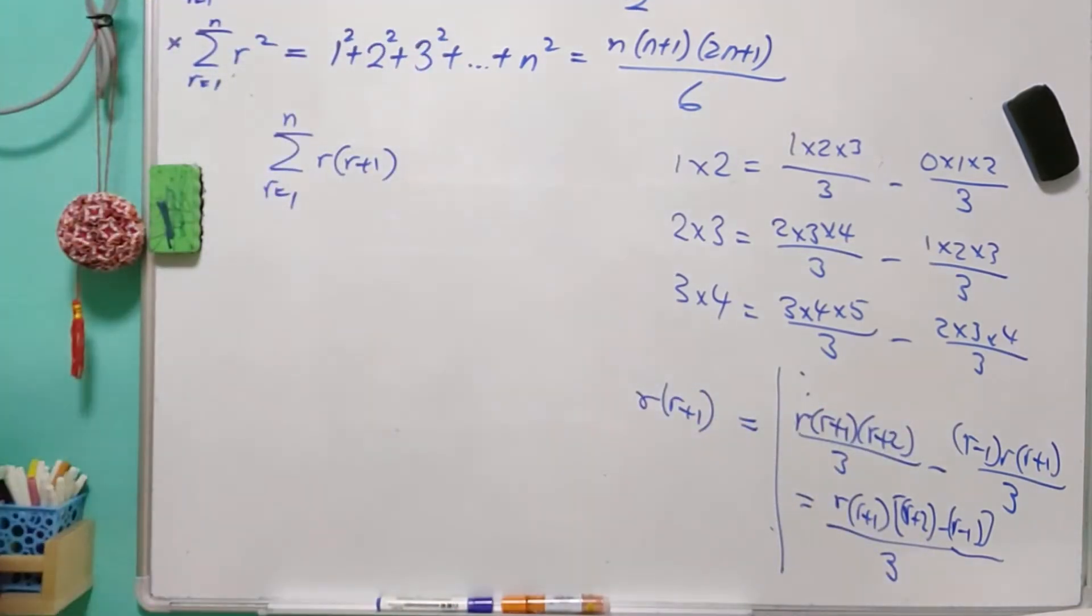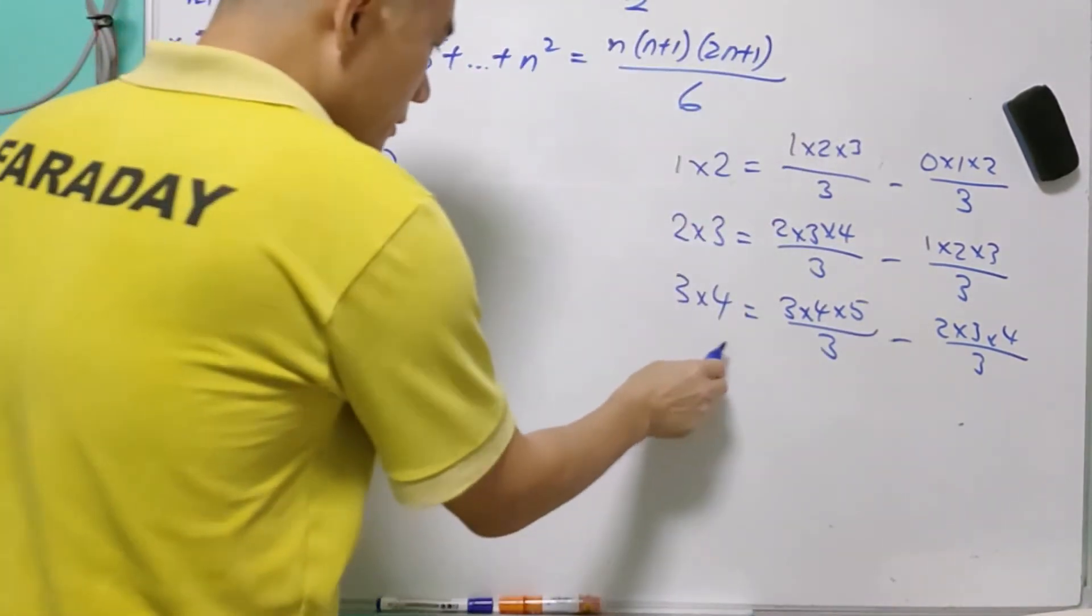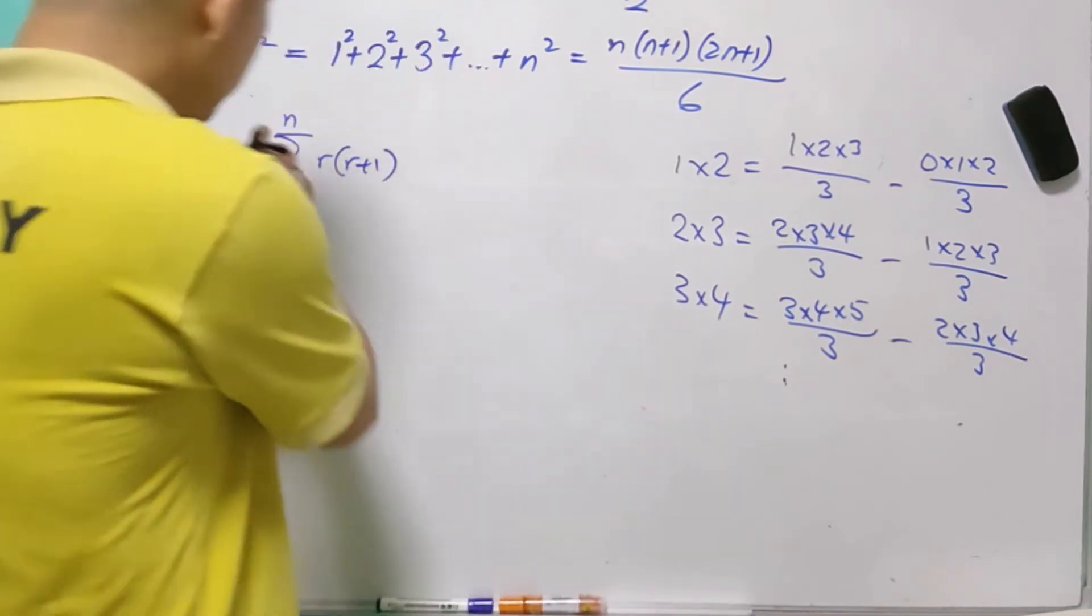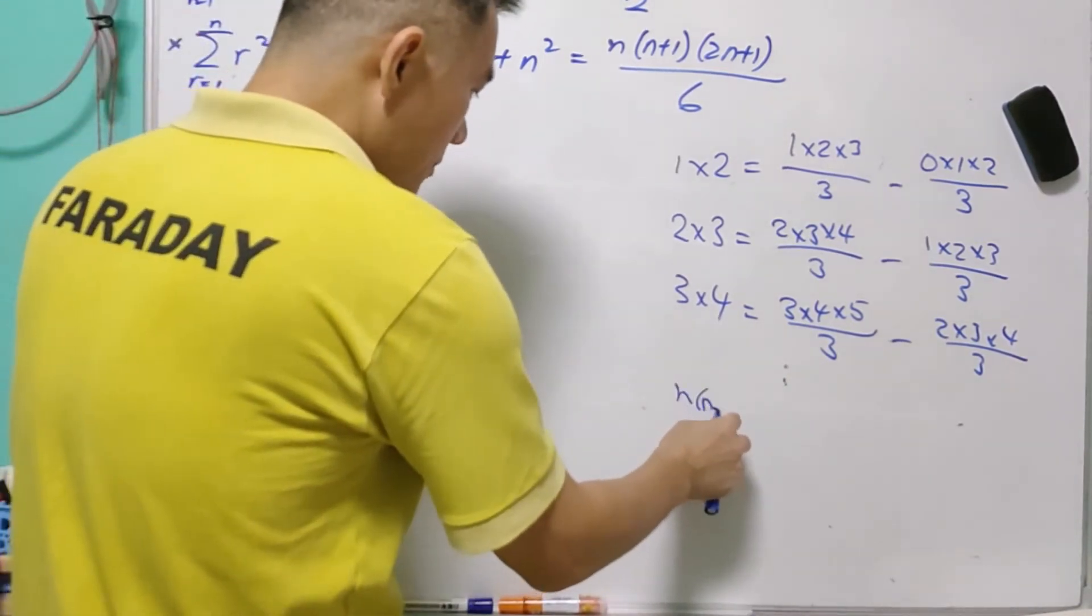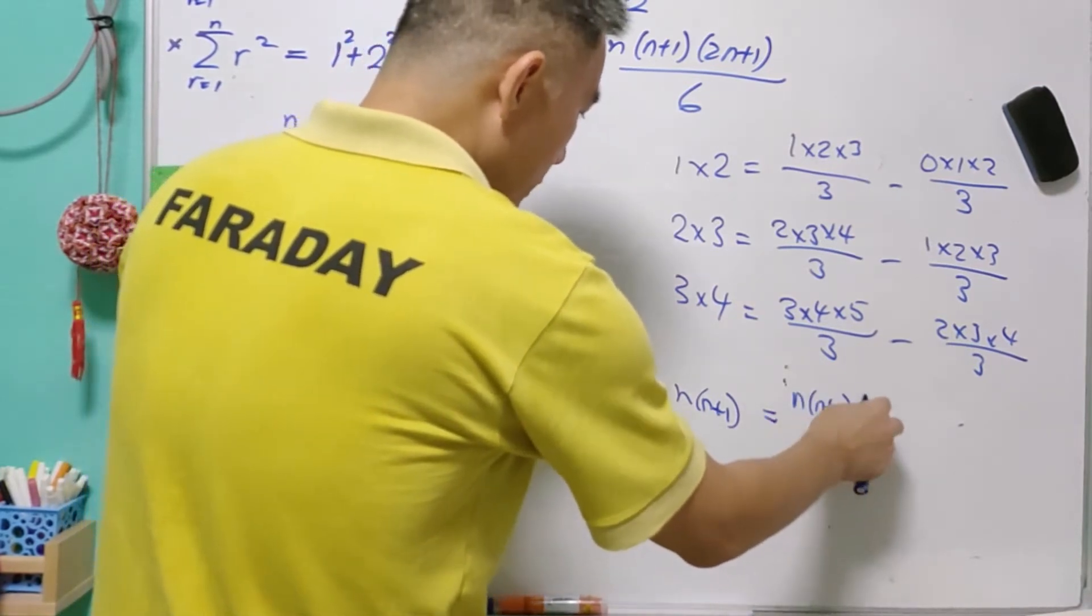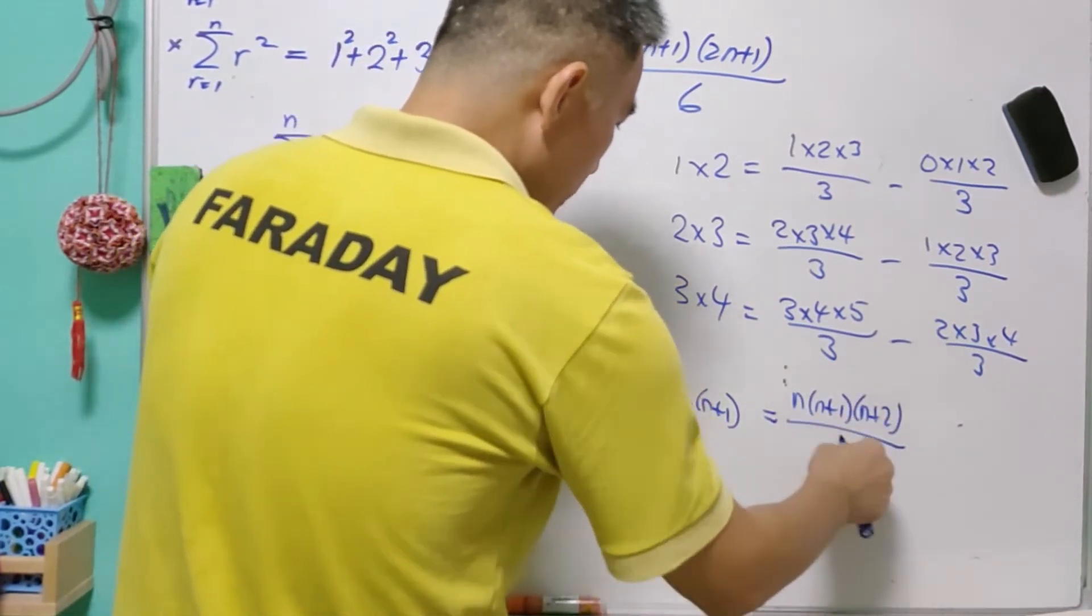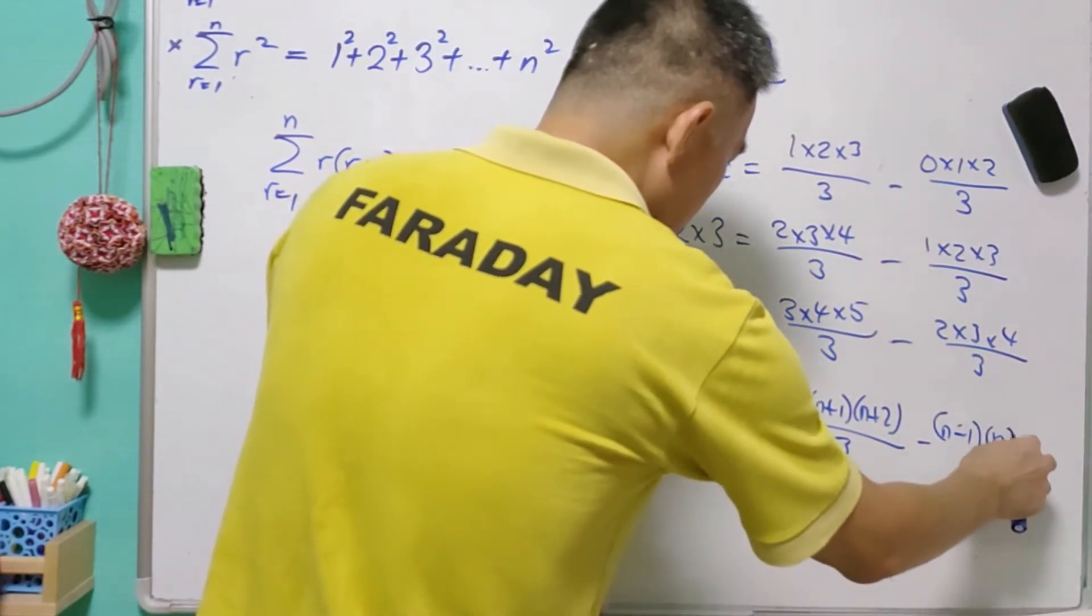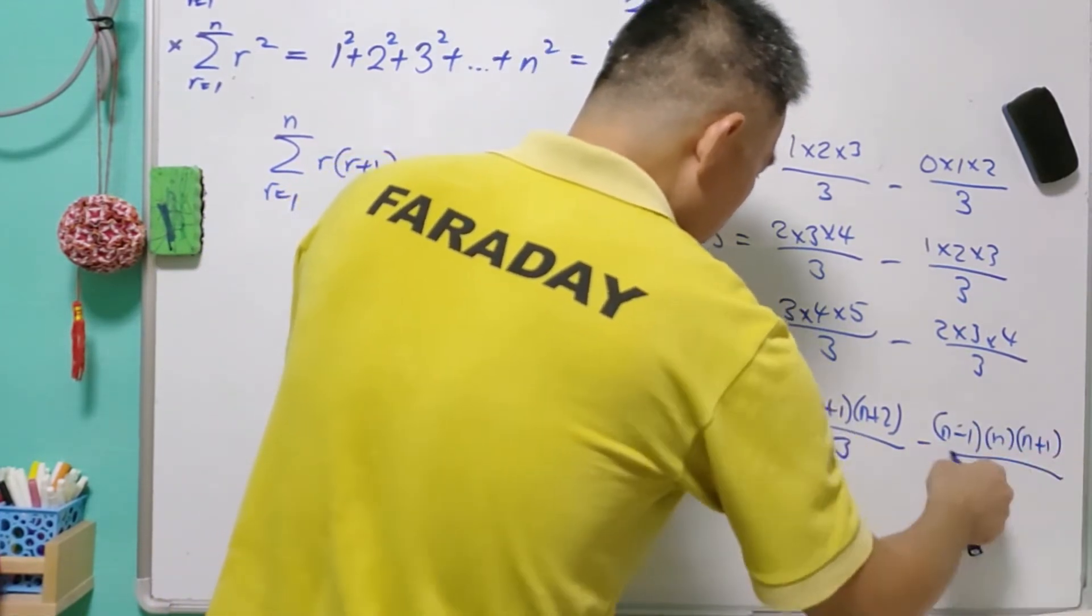This is a formula. And we can write it until r equals to n. So n(n+1) will be equal to n(n+1)(n+2) over 3, minus (n-1)n(n+1) over 3.